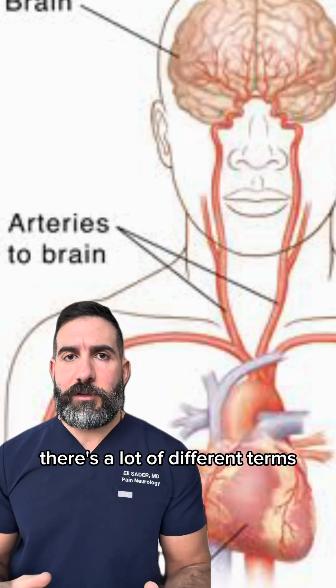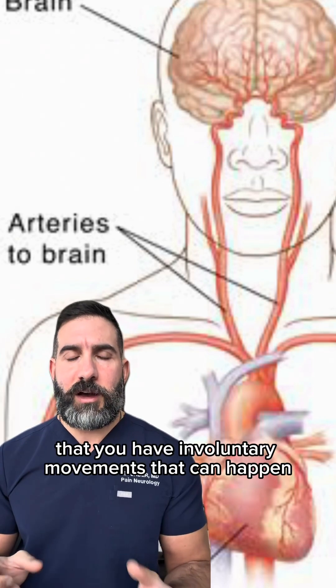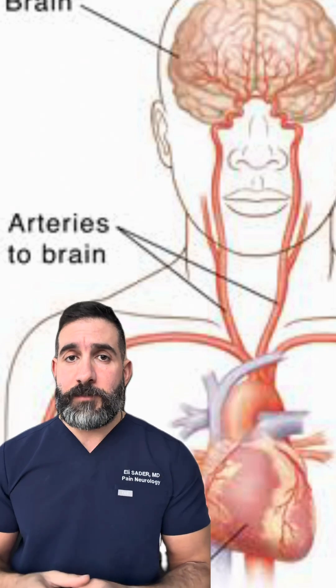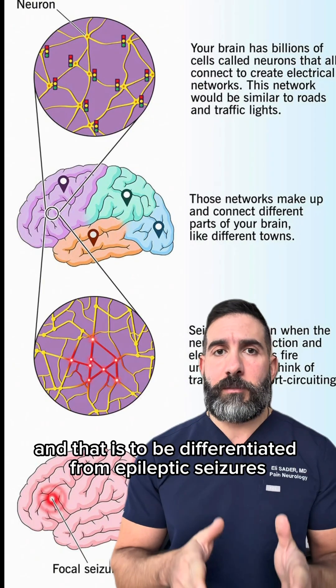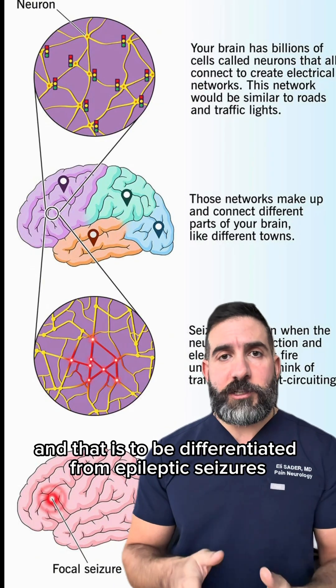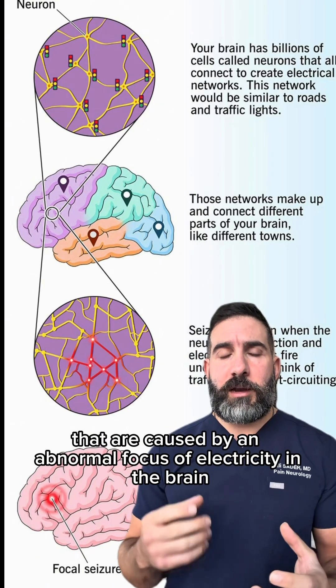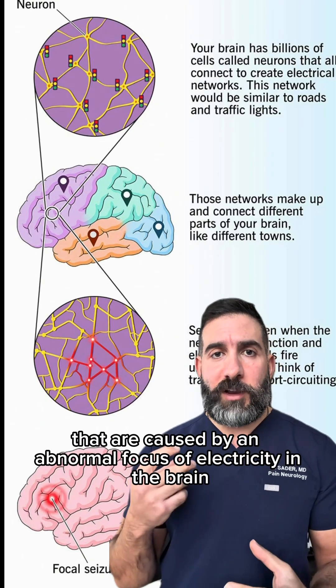Myoclonus — there are a lot of different terms — but the idea is that you have involuntary movements that can happen. And that is to be differentiated from epileptic seizures, which are caused by an abnormal focus of electrical activity in the brain.